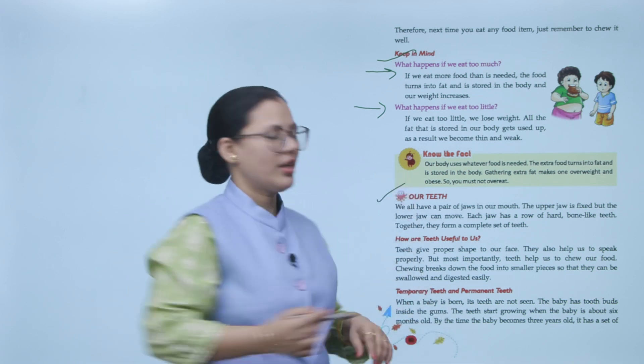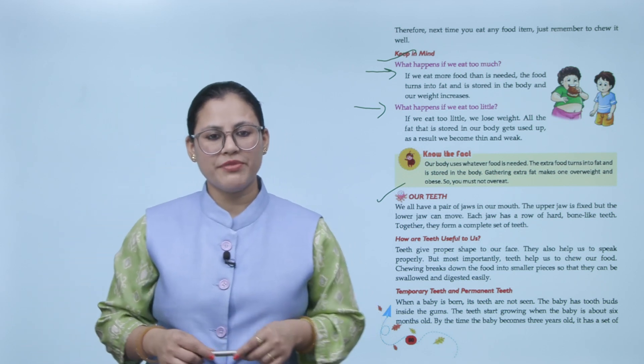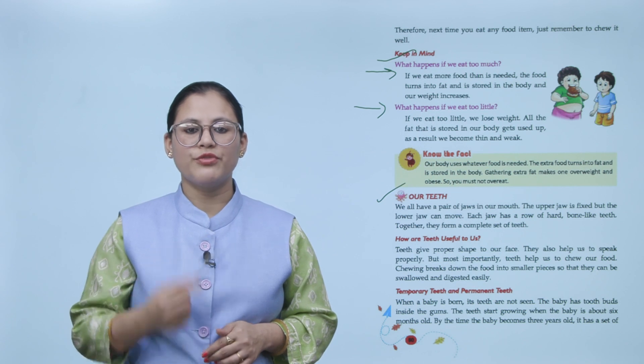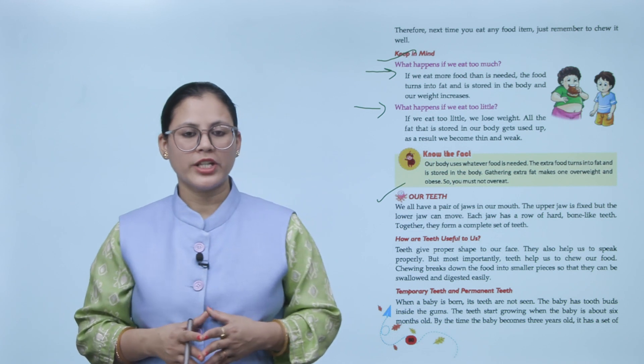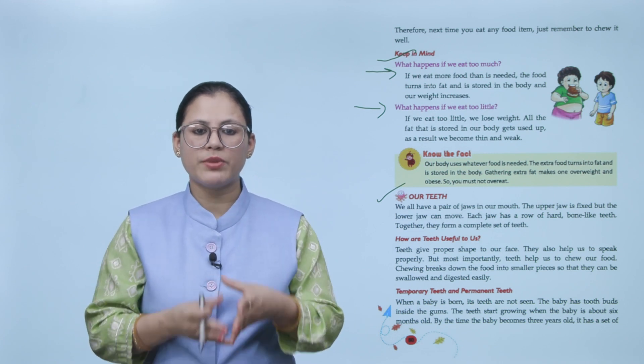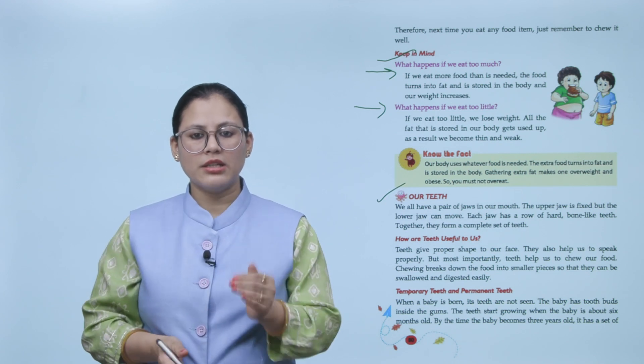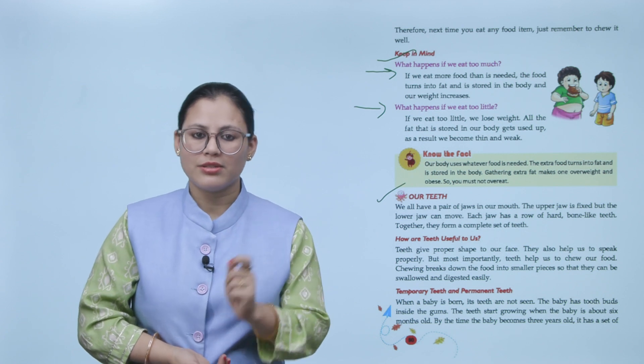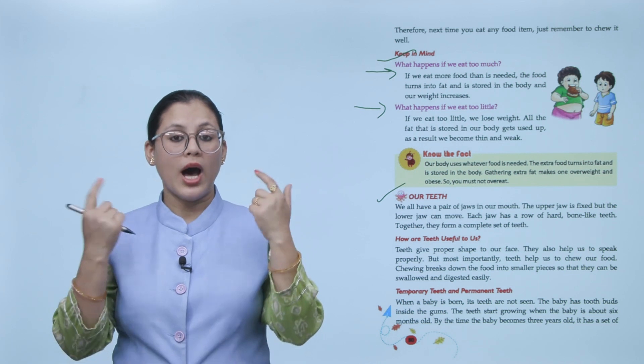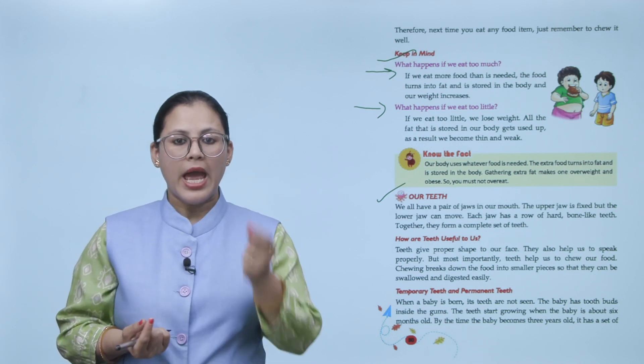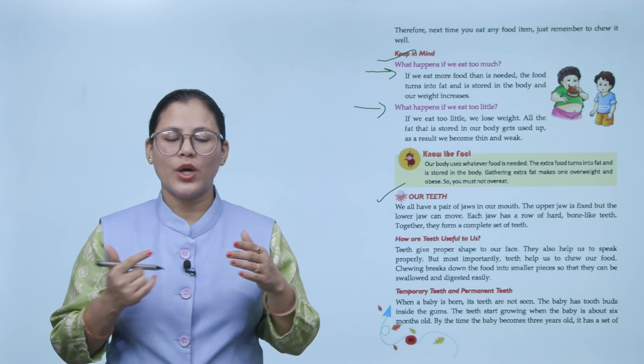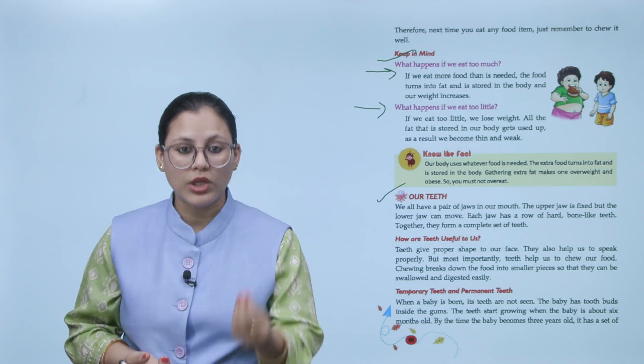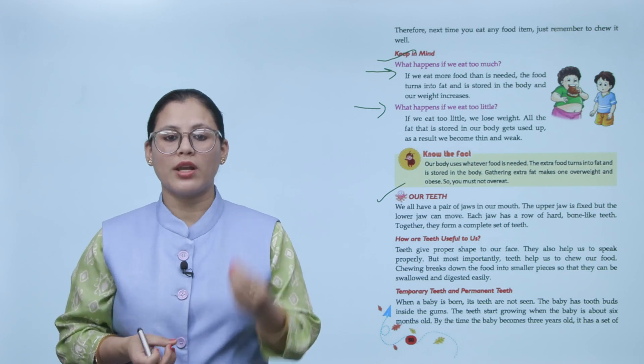Our teeth. We all have a pair of jaws in our mouth. The upper jaw is fixed but the lower jaw can move. Each jaw has a row of hard bone like teeth. Together, they form a complete set of teeth. How are teeth helpful to us? Teeth give proper shape to our face. They also help us to speak properly. But most importantly, teeth help us to chew our food. Chewing breaks down the food into smaller pieces, so that they can be swallowed and digested easily. If you notice in our mouth, there are two pair of jaws. The upper jaw is fixed, but the lower jaw is movable. In every jaw, you have hard bone like teeth. And with it, we make a complete set. Why are teeth important for us? Because the first thing is they provide our face a proper shape. And they help us speak properly. And most importantly, they help us chew our food properly.